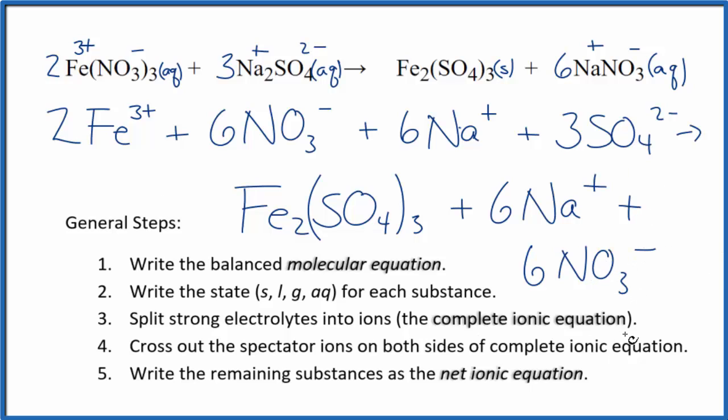Now we can cross out spectator ions, they're on both sides. I can see in the reactants, I have 6 nitrate ions, also in the products. These are spectator ions, and we can cross those out.